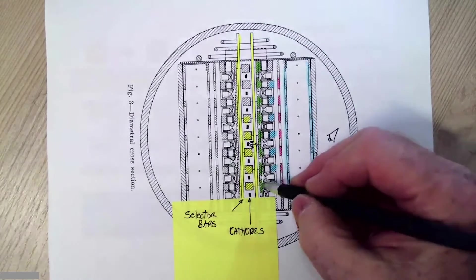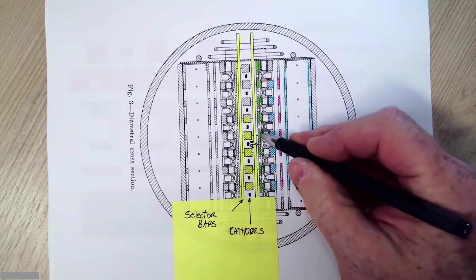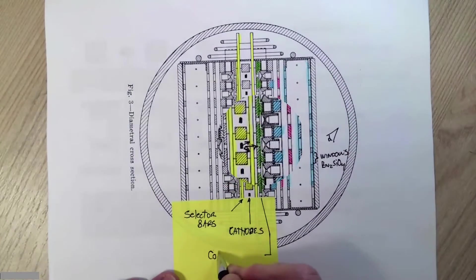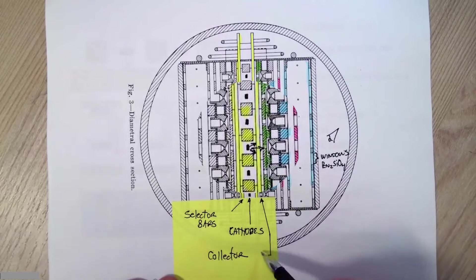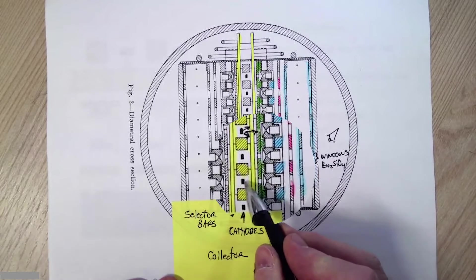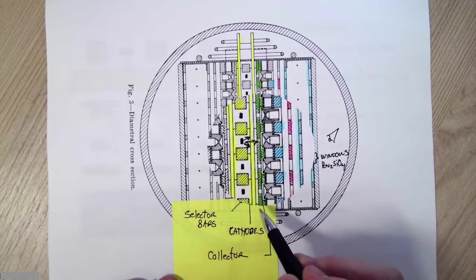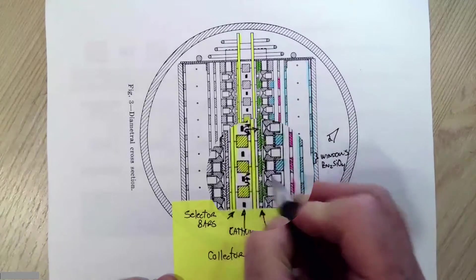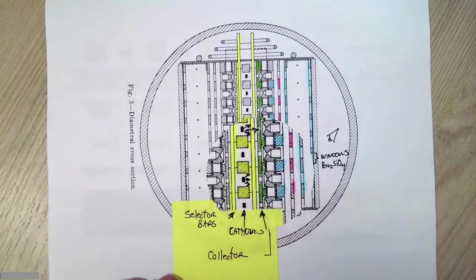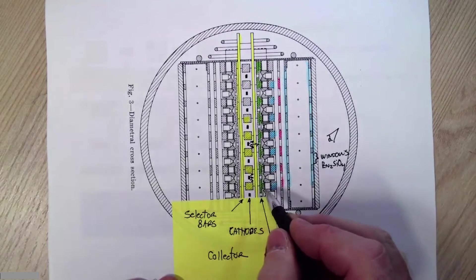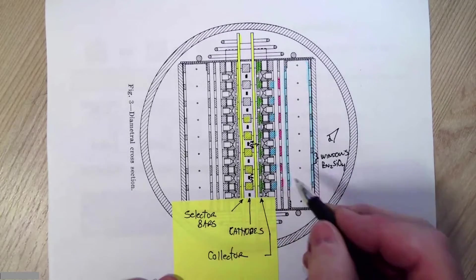Our next structure I've colored in green. This is the collector plate. The collector will tend to collect most of the electron current that's emitted by these cathodes. But there are some small holes for some current to get through. The collector also provides a reference potential for our next structure.